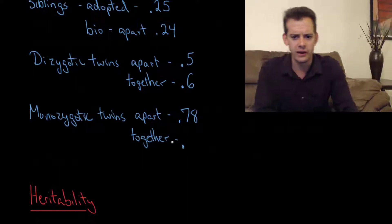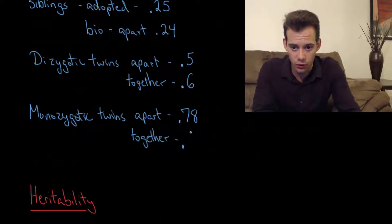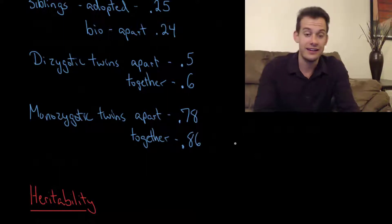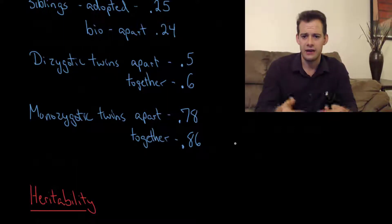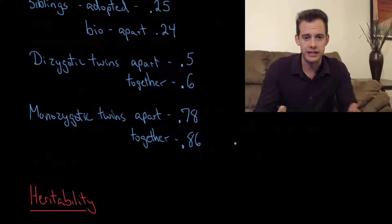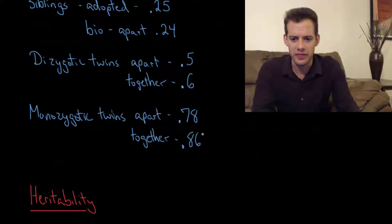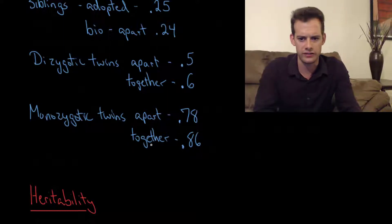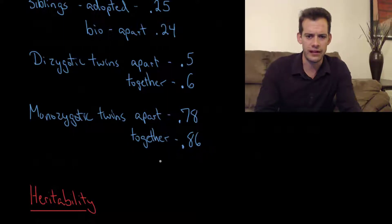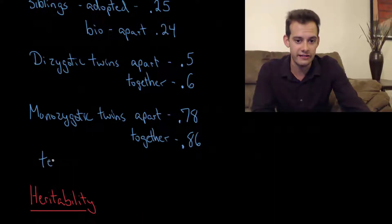Then we have monozygotic twins raised in the same house, and in this case we get a correlation of 0.86. This is really high. I wouldn't expect you to memorize all of these numbers, but this one is worth remembering — the idea that monozygotic twins have a correlation in their IQ scores of 0.86. The reason this is worth remembering goes back to the idea of test-retest reliability. What's the test-retest reliability for IQ tests? If a person takes an IQ test and then takes it again six months later, how similar are their scores?